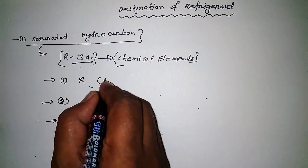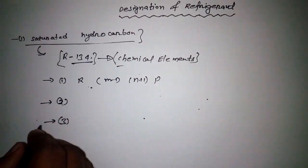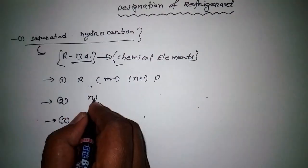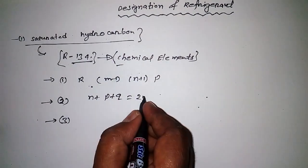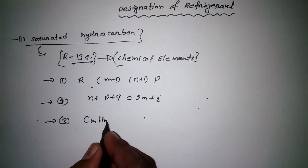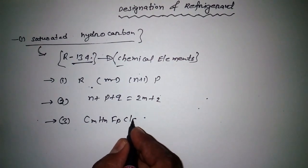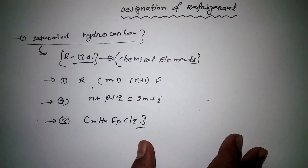First, you need to remember the formula: R(m-1)(n+1)p. Another formula: n + p + q = 2m + 2. And finally: C_m H_n F_p Cl_q. This last one is also useful for other refrigerant designations.